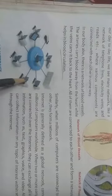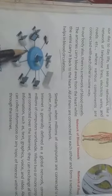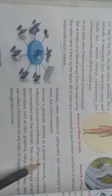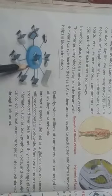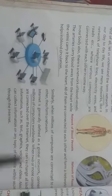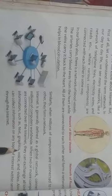Millions of computers are connected to each other and this forms a network. The internet is generally defined as a global network — it is a big network that connects millions of computers worldwide. When two or more computers are connected over the internet, they can exchange all kinds of information such as text, graphics, voice, and audio.